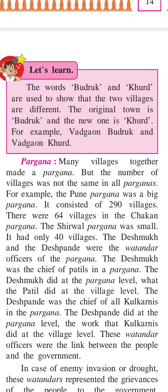The Shirwal Paragana was small, having only 40 villages. The Deshmukh and Deshpandes were the Vatandhas — the hereditary officeholders — of the Paragana, and they were the workers at that level.